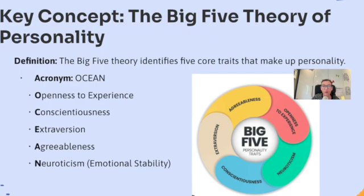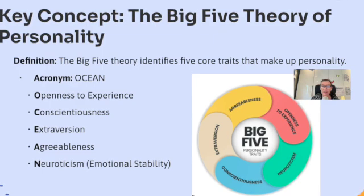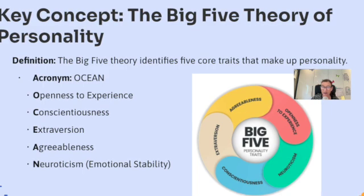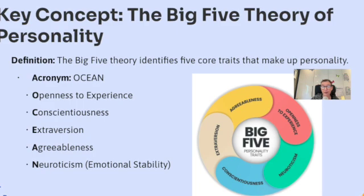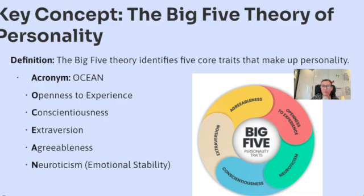The fourth trait is agreeableness. This trait reflects kindness, cooperation, and empathy. For example, someone high in agreeableness might volunteer to help a friend in need or resolve conflicts peacefully. A person lower in agreeableness might be more competitive or less sympathetic in interactions.